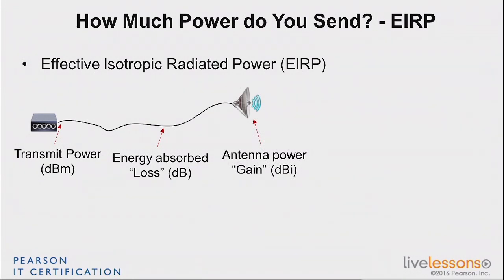We use all these items together. Keep in mind the transmit power of the access point is in dBm — we've already converted that to dB. The loss of the cable is in dB as well. When you buy a cable, it typically gives you a value, say 4 dB per a certain distance. So you cut your cable, make the ratio to the distance, and determine how much loss you have in that piece of cable.